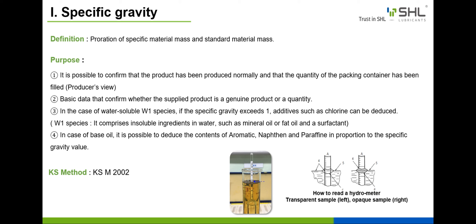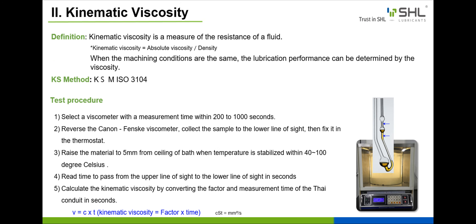KS method: KSM 2002. Next, we learn about the test method of kinematic viscosity. Kinematic viscosity is a measure of the resistance of a fluid. When the machining conditions are the same, the lubrication performance can be determined by the viscosity. Kinematic viscosity is a property that directly determines the lubricating function of the oil, determines the lubricating film thickness, lubricating film durability, and therefore determines the lubricating effectiveness.